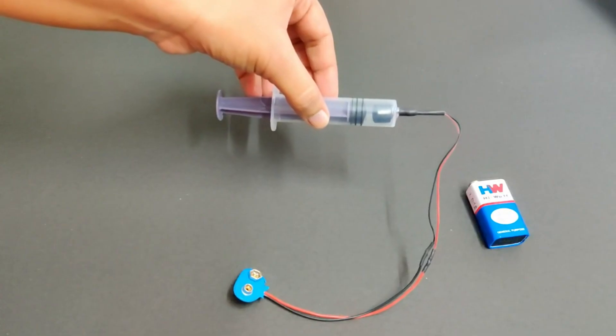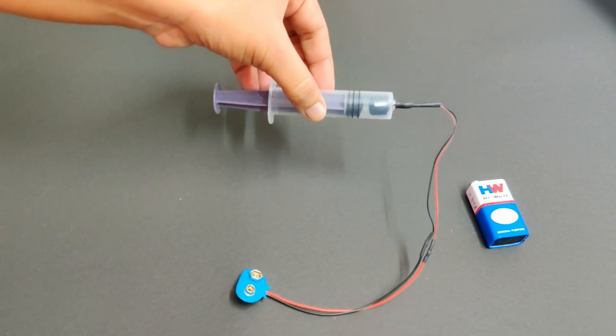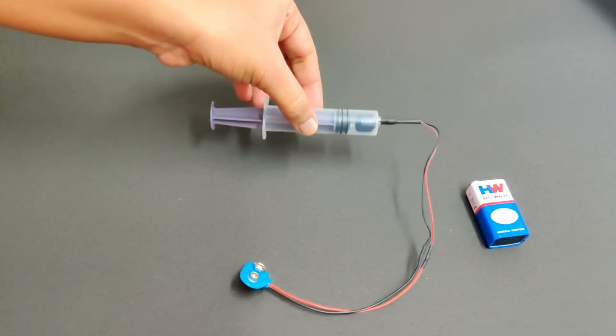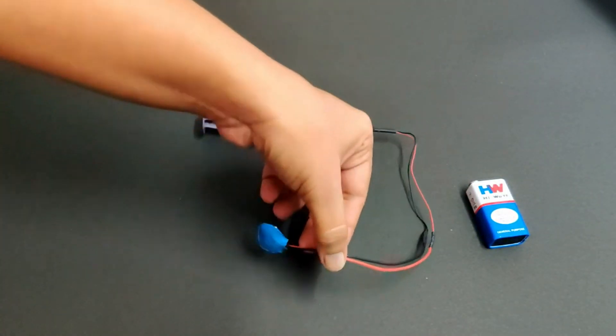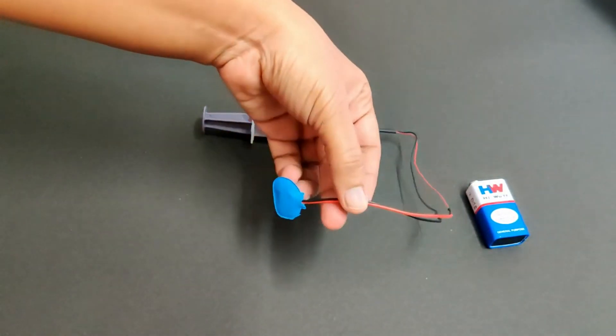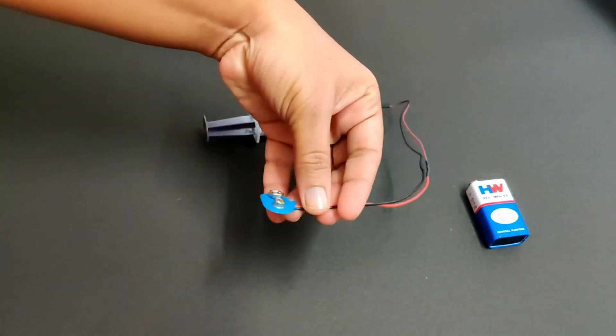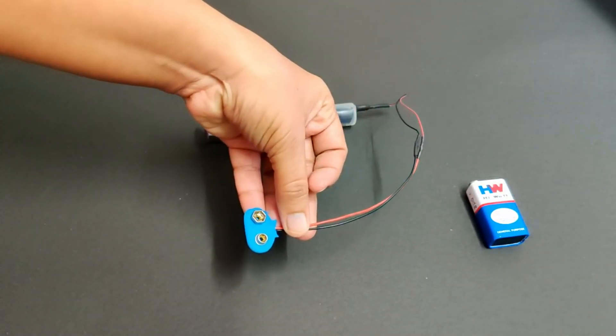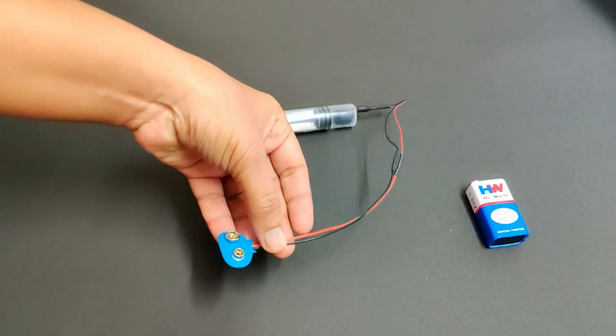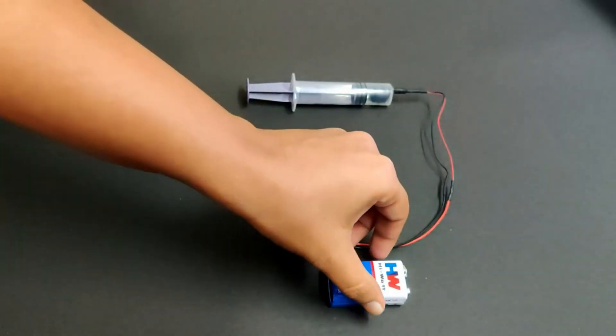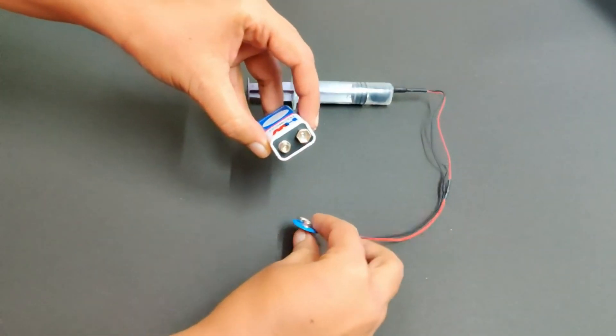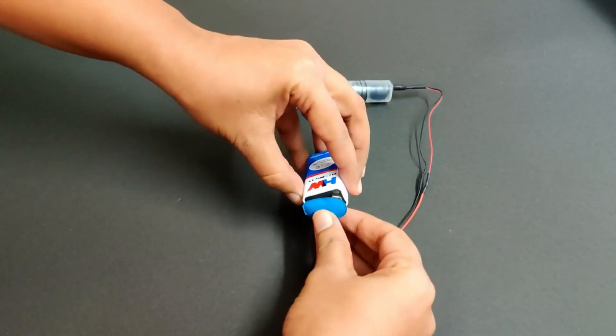Look here, the buzzer is fitted inside the syringe and the wires are connected to the battery clip. The nozzle of the syringe is closed with tape such that air cannot enter the syringe.